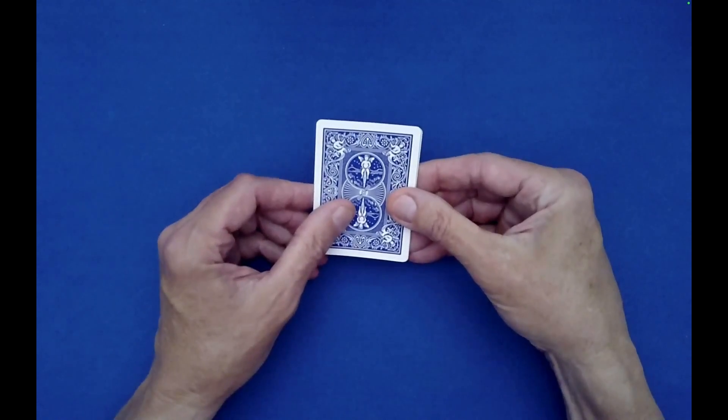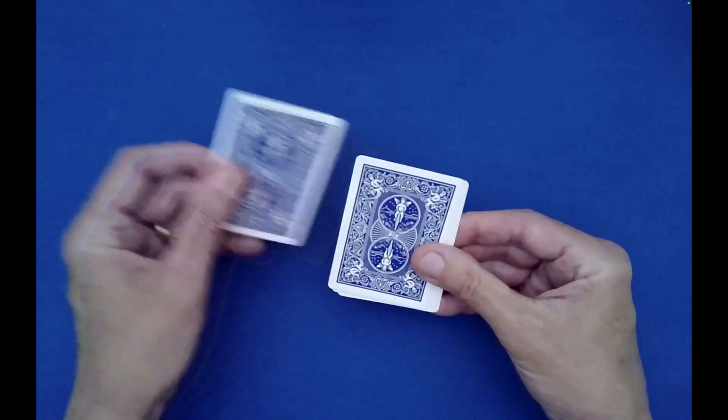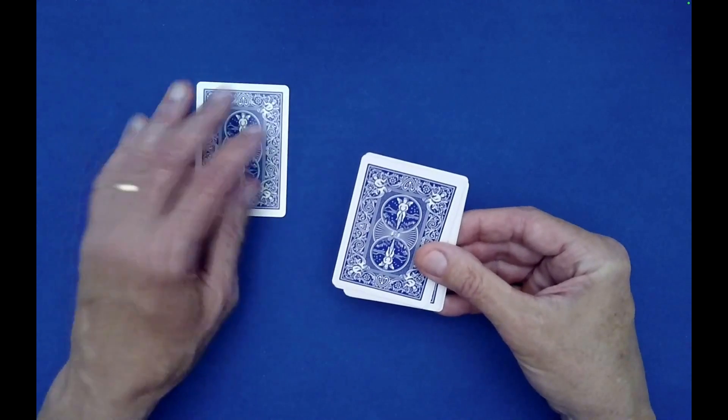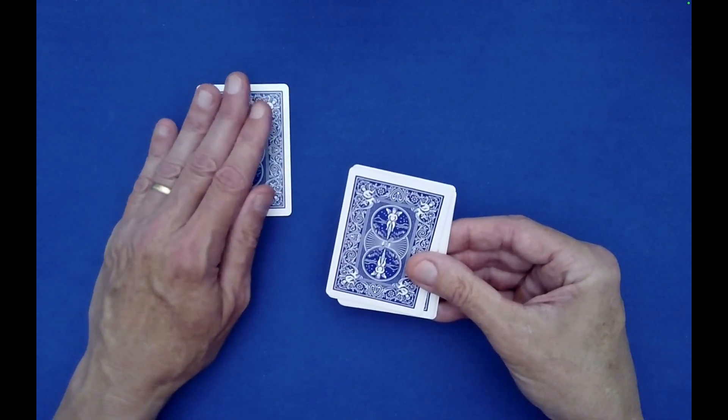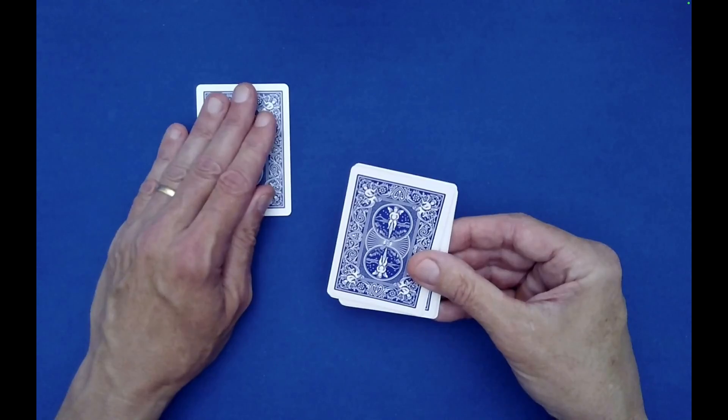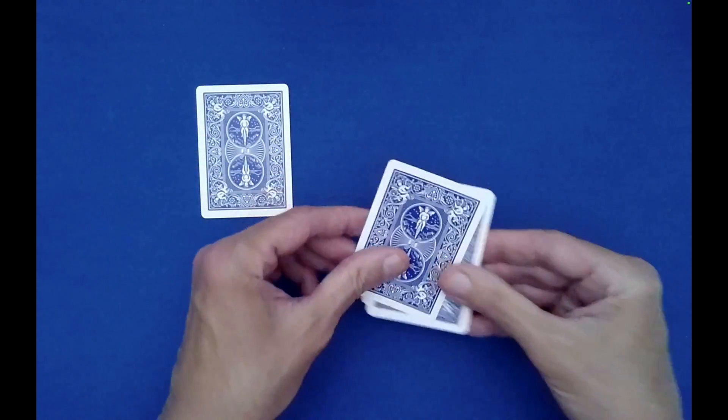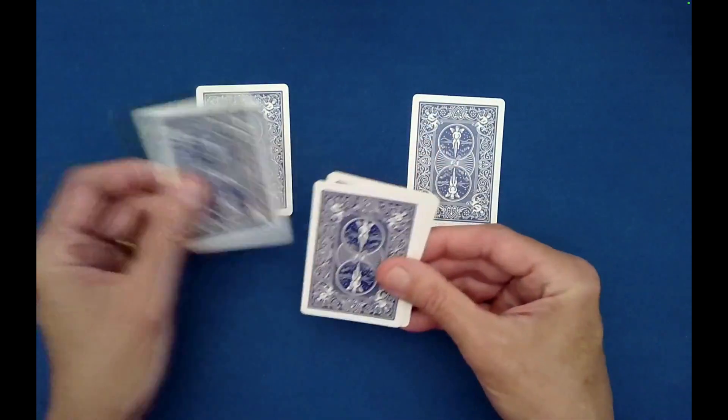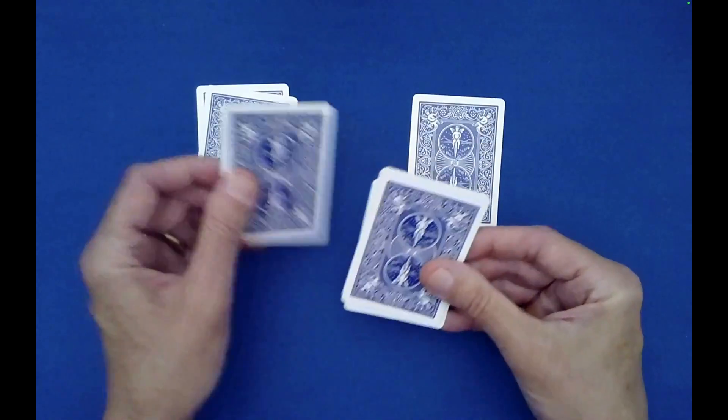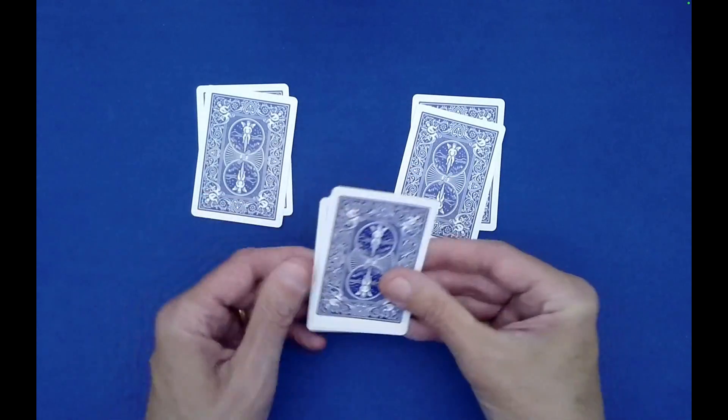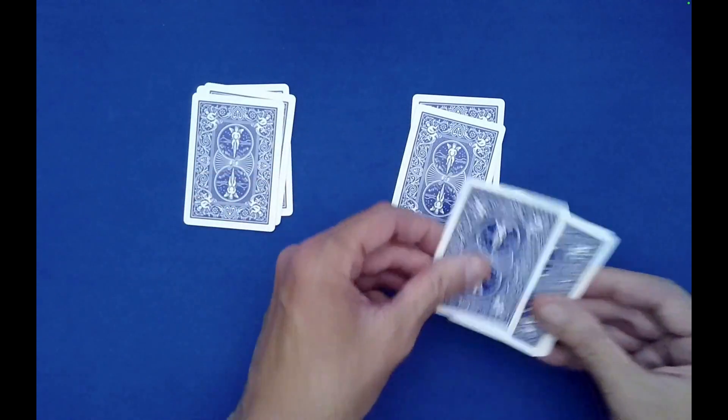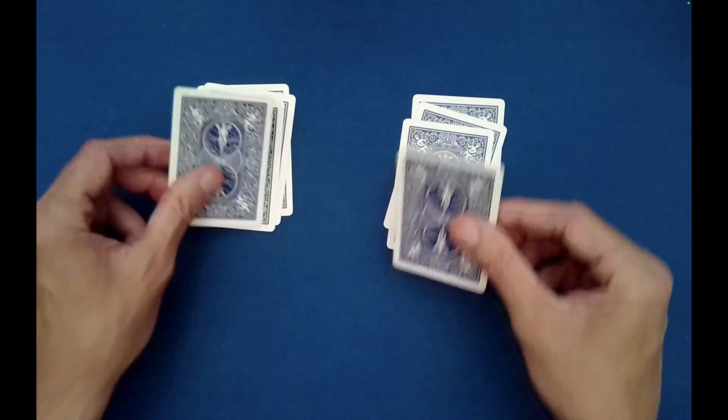So the under-down shuffle goes like this. You go under, the next one goes down. But what we're going to do is we're going to put them down left, right, left, right. So down, under, down on the right, under, down on the left, under, down on the right. So you just continue to do that until all of the cards have been set on the table.